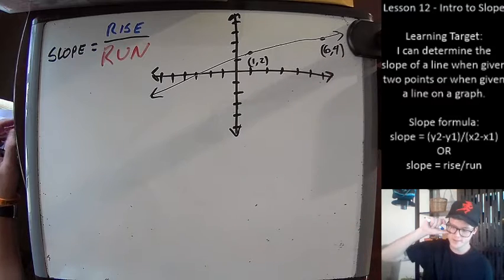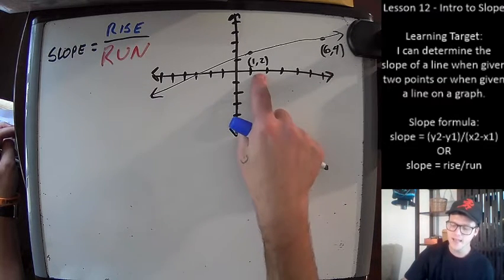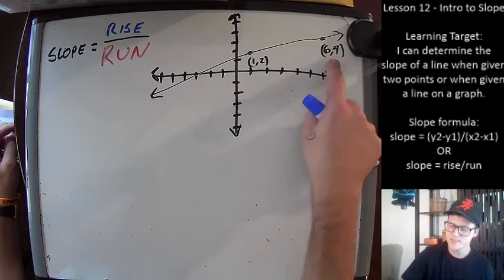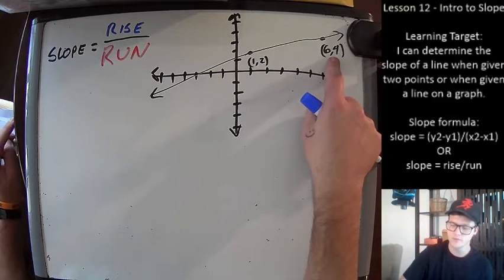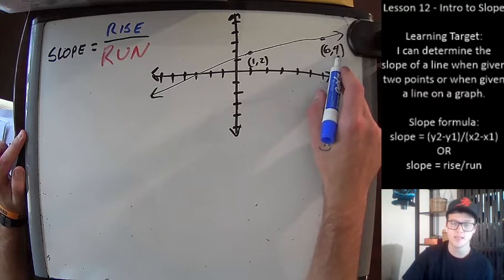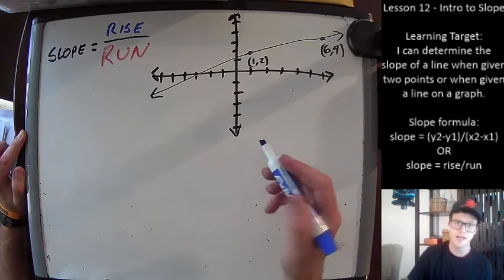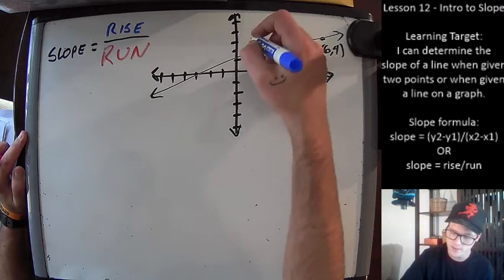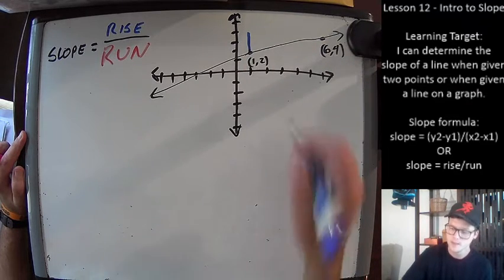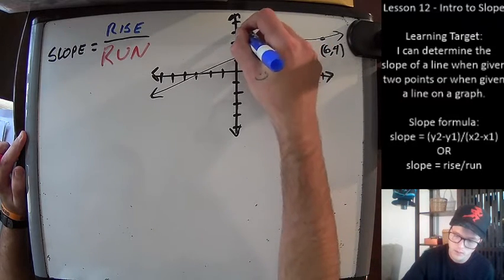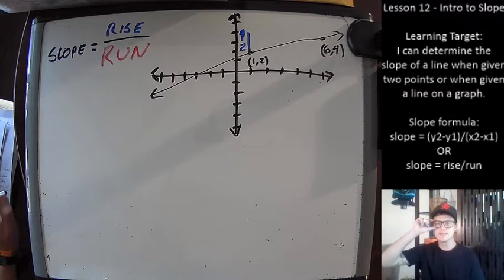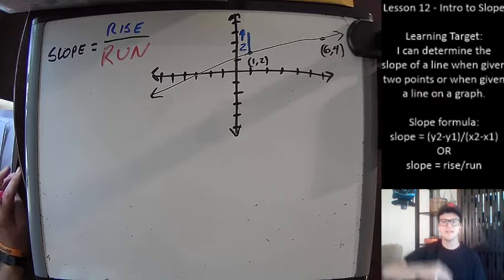First we see how far up this point has to travel to be at the same level as the other point. The y value is currently two, and the destination point's y value is four, so we travel up two units. That's what 'rise' means — how far up or down you have to go to get to the same level as your destination.